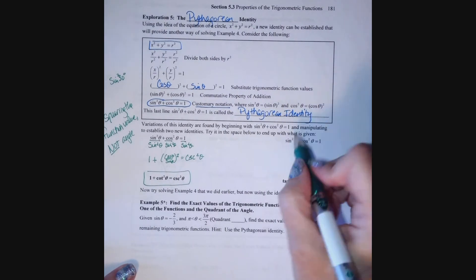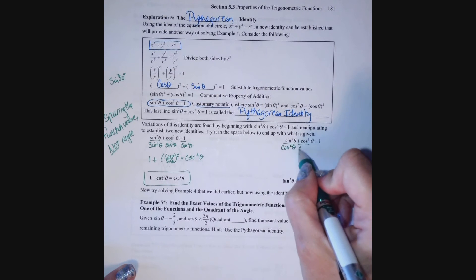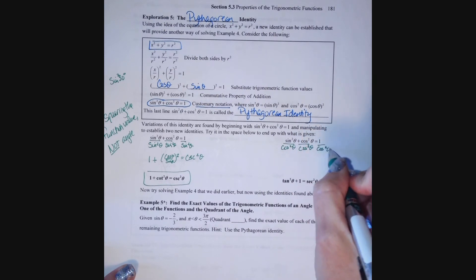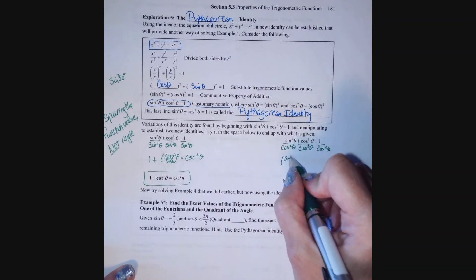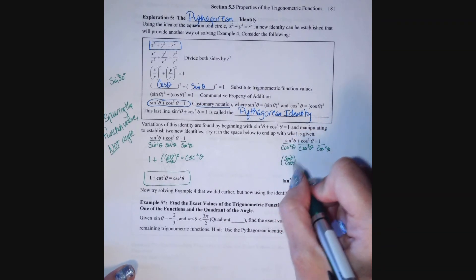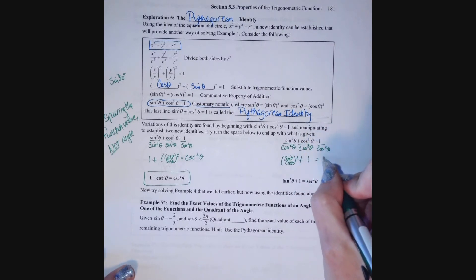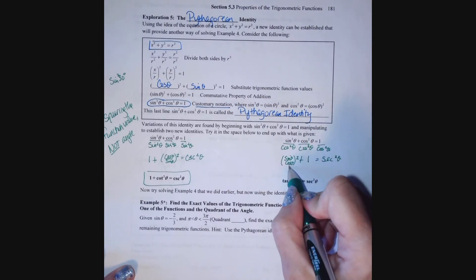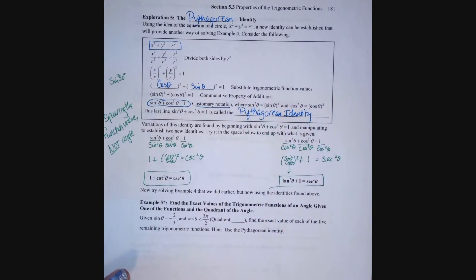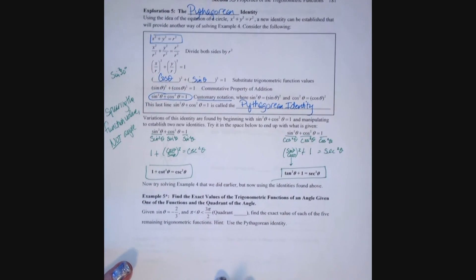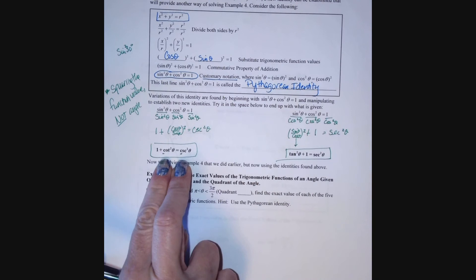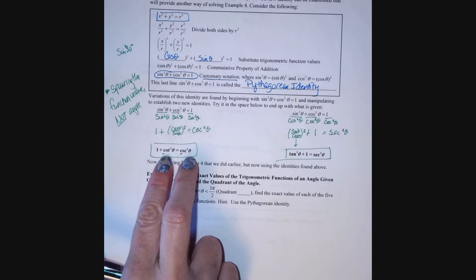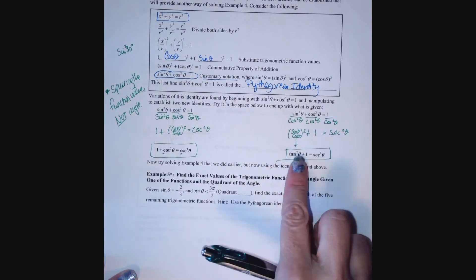For the third variation, we divide everything by cosine squared theta. Sine squared theta over cosine squared theta is tangent squared theta, giving us tangent squared theta plus 1 equals secant squared theta. A memory aid: for Pythagorean identities, the C's go together — 1 plus cotangent squared theta equals cosecant squared theta — and the other one is what's left over.